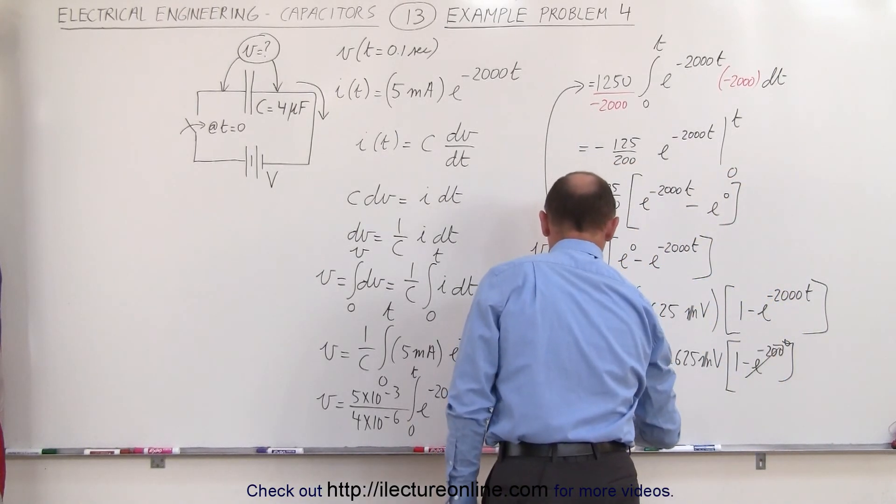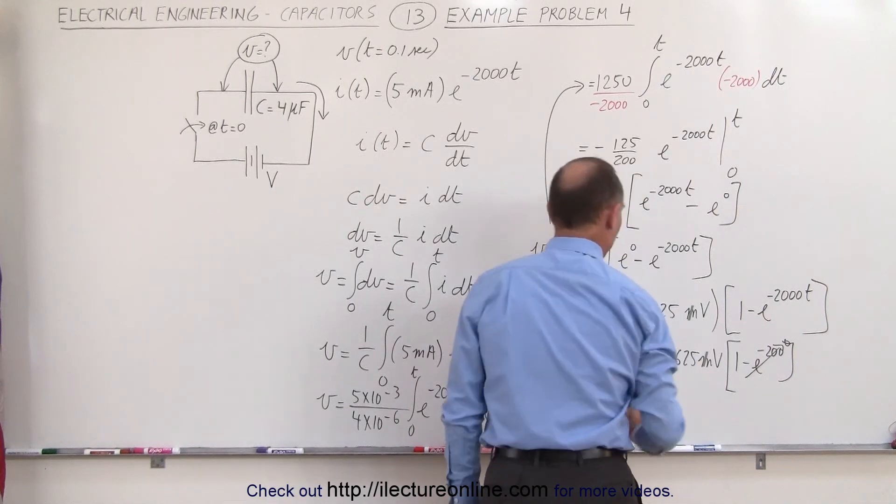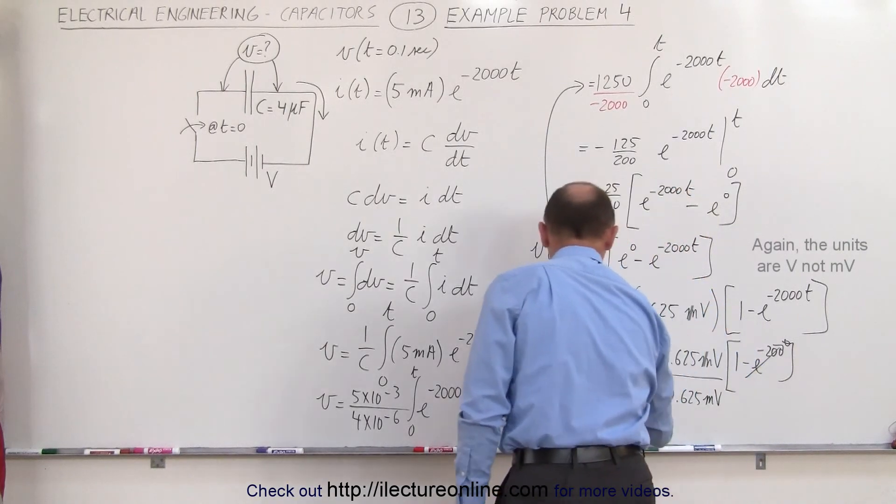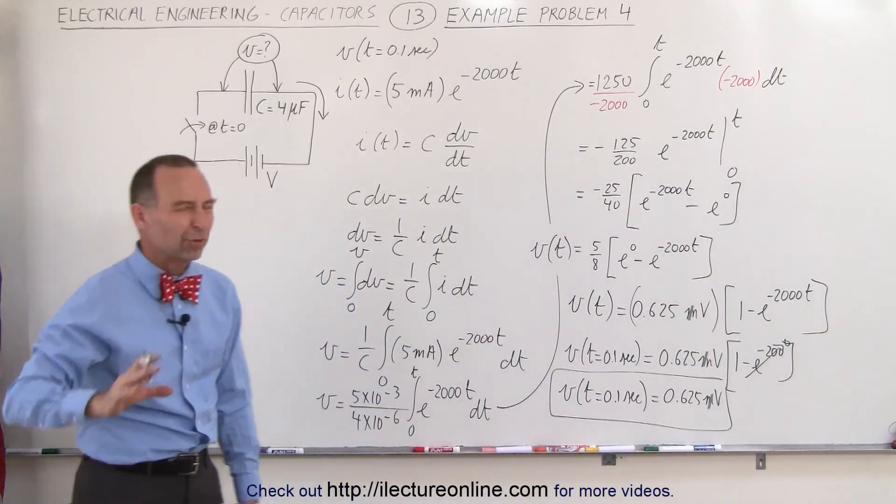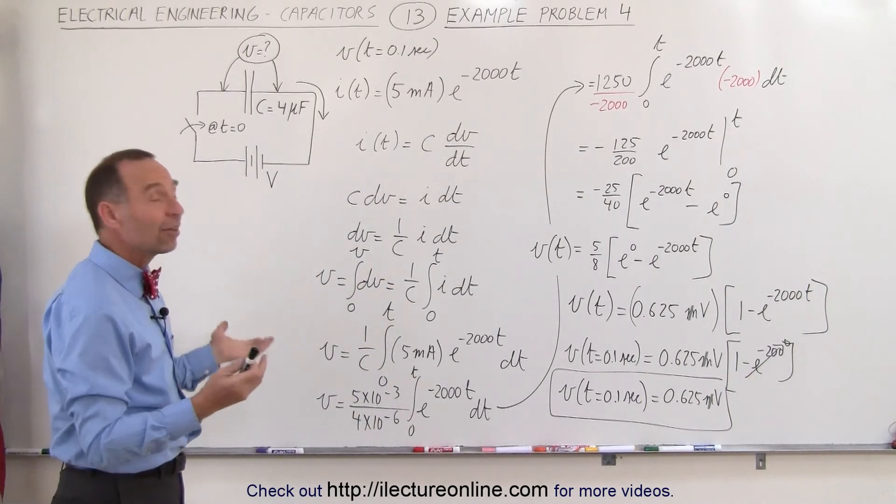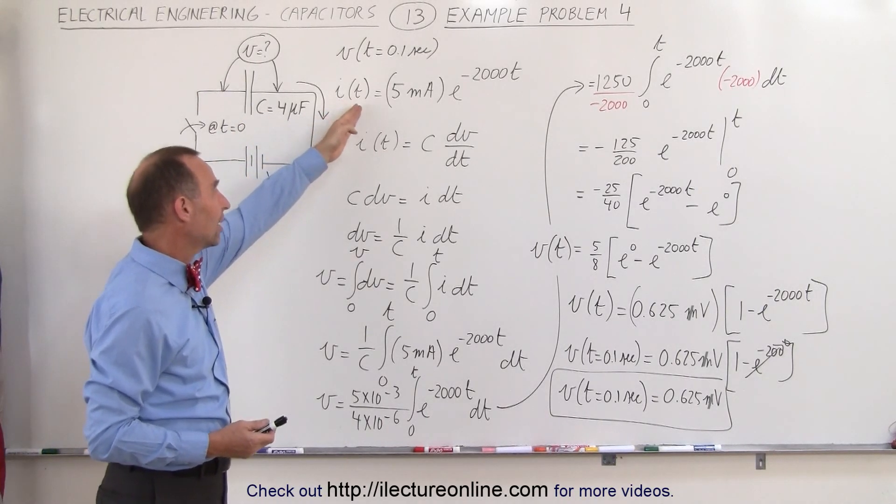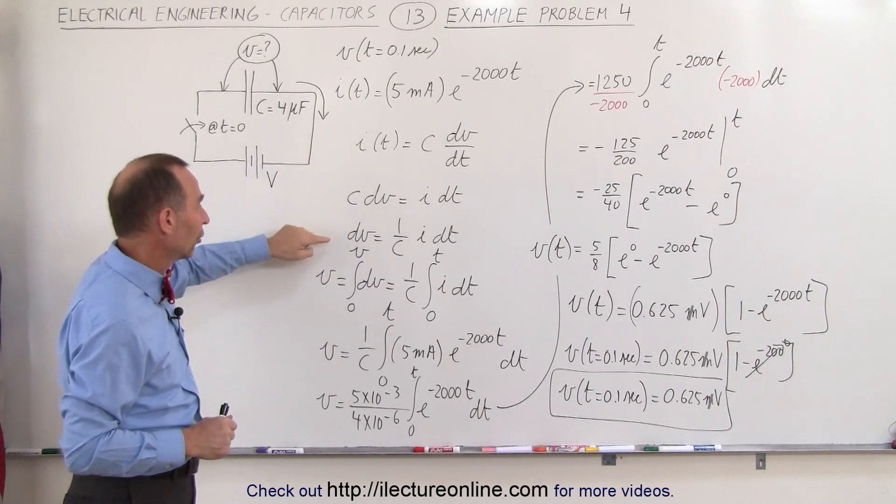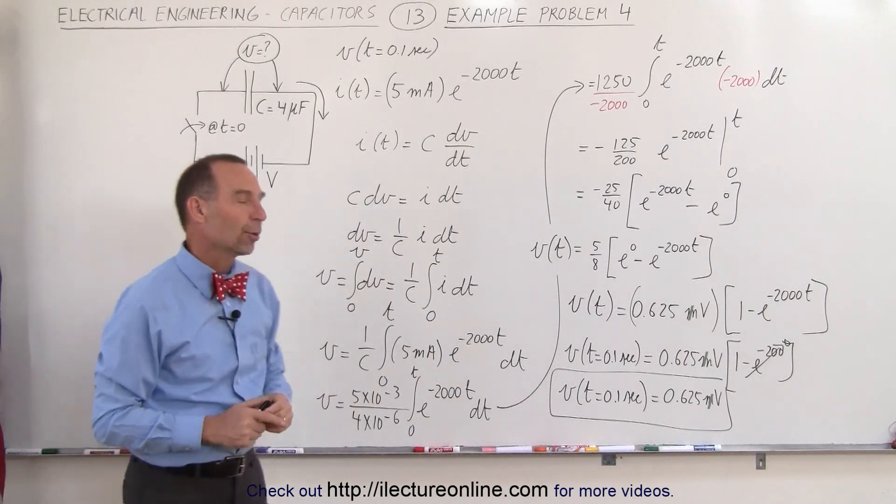In other words, v when one tenth of a second has elapsed, that will be equal to 0.625 millivolts, and that would then be the answer after 0.1 seconds. I probably should have picked a much smaller number to give it a little bit more significance. But that's how we do that, if you're given a function that expresses the current that's a function of t, and you want to know the voltage across the capacitor, you simply have to convert to this equation, dv equals this, take the integral, and then plug in the appropriate values for t.